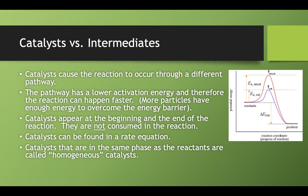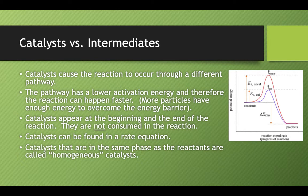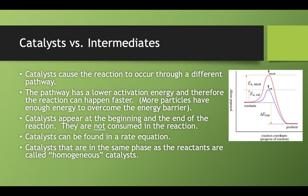Just to make sure you know the difference, a lot of times there are AP questions that ask you to determine if something's a catalyst or an intermediate. So how does a catalyst work? They cause the reaction to take a different path and that different path has a lower activation energy. As a result, the reaction can happen faster.